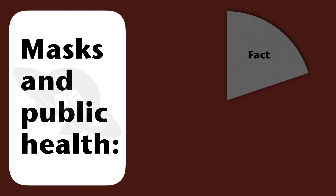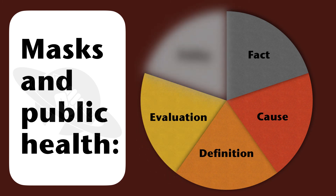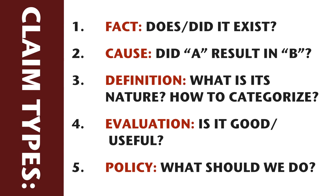These are called claims of fact, cause and effect, definition, evaluation, and policy. You can think of these five different claims as answering five different types of questions. Fact claims answer: does or did something exist and is it significant? Cause claims answer: did factor A result in circumstance B? Definition claims answer: what's the nature of this thing and what category does it belong to? Evaluation claims answer: is this thing good or useful or not? And policy claims answer the question: what should we do?